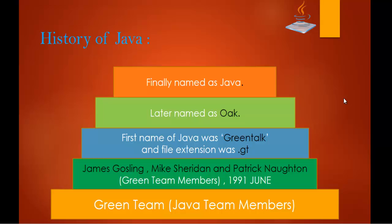Let us understand a bit of the history of Java and how it evolved. A team called the Green Team — the Java team members called themselves Green Team members — included James Gosling, Mike Sheridan, and Patrick Norton. This team was formed in June 1991, and these three were the core members who wrote the Java programming language. Initially they named it Green Talk with file extension .gt, later renamed it to Oak, and finally it was named Java.